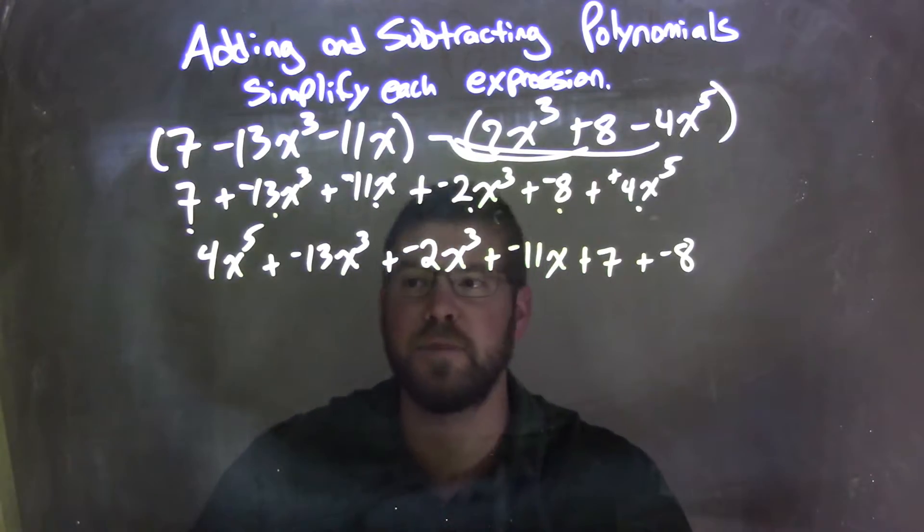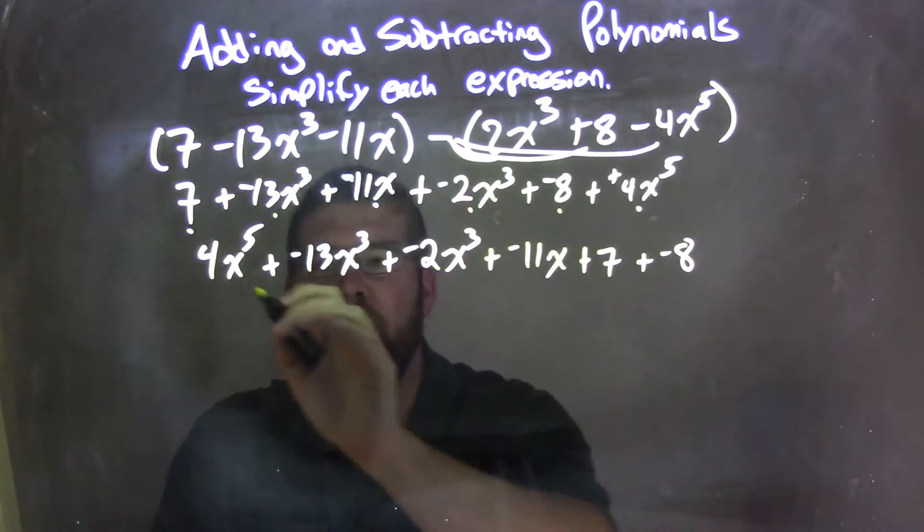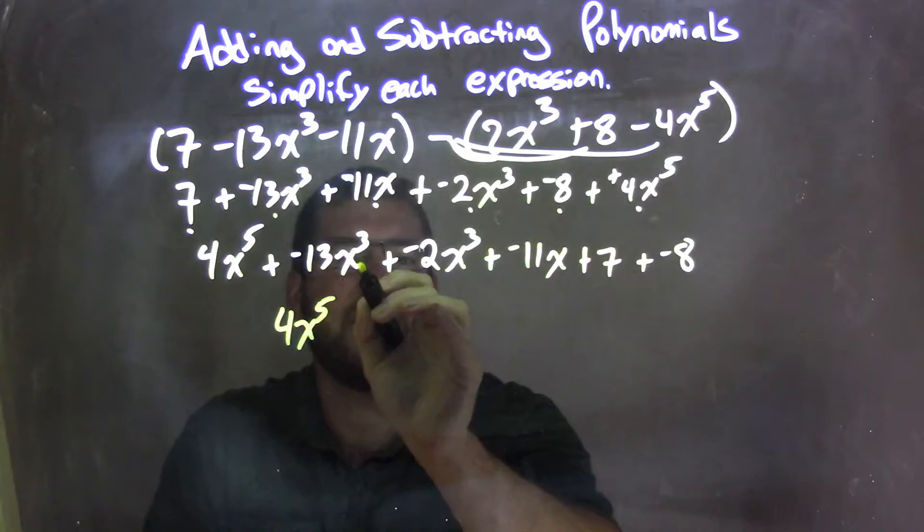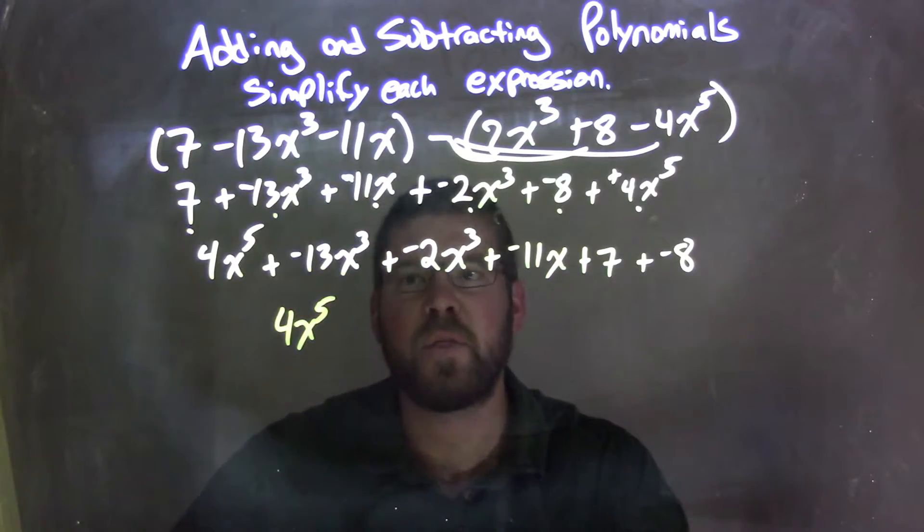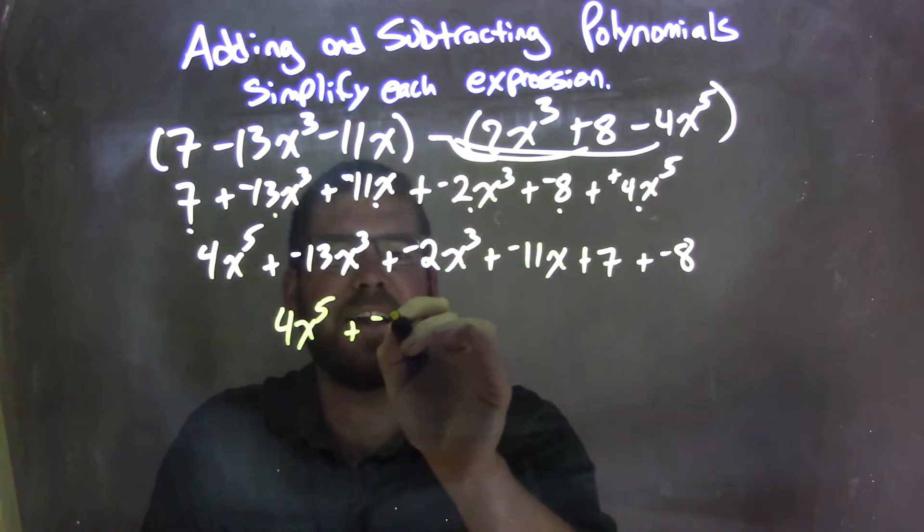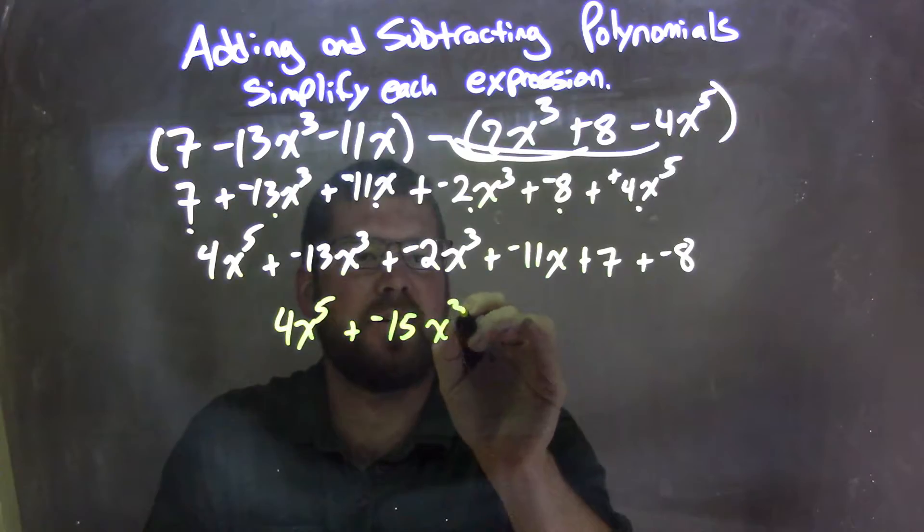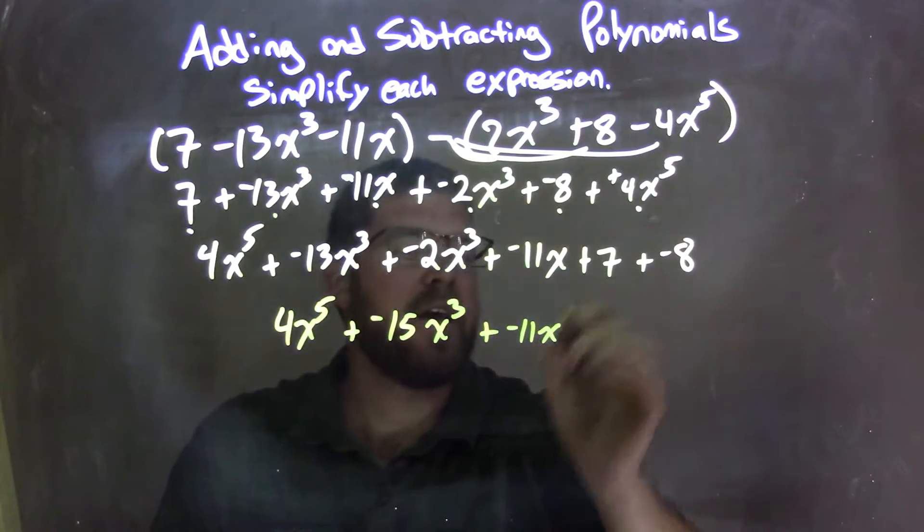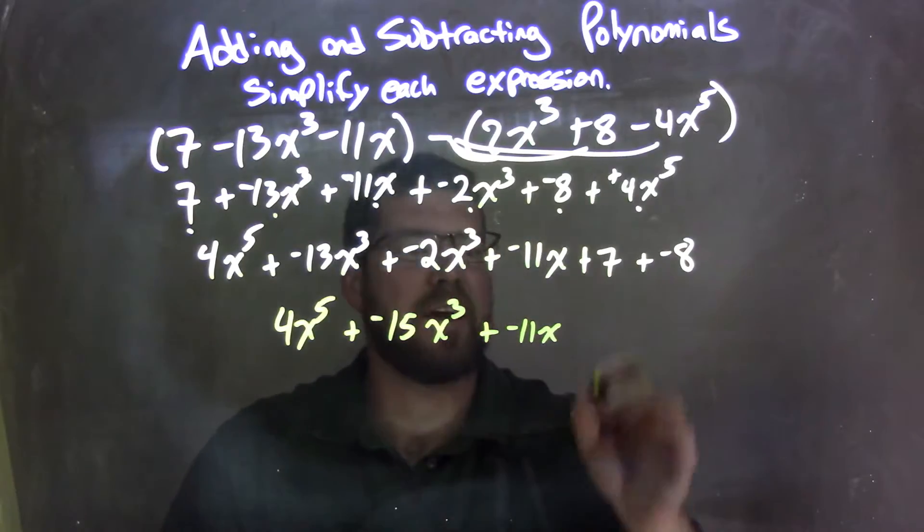So now let's combine like terms. There's nothing else for x to the 5th, so it's just 4x to the 5th here. Negative 13x to the 3rd plus a negative 2x to the 3rd is a negative 15x to the 3rd. Nothing but just negative 11x. And then 7 plus a negative 8 is a negative 1.